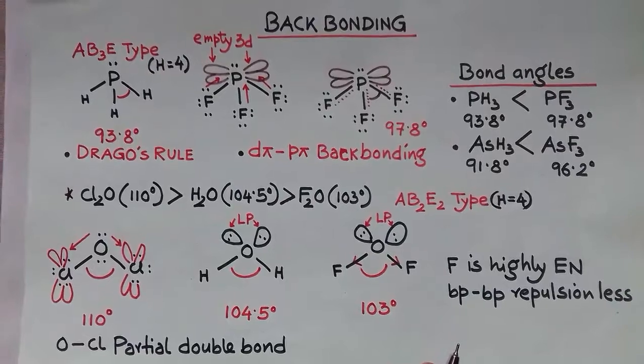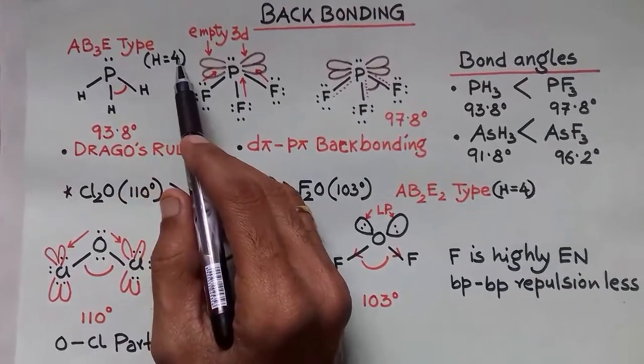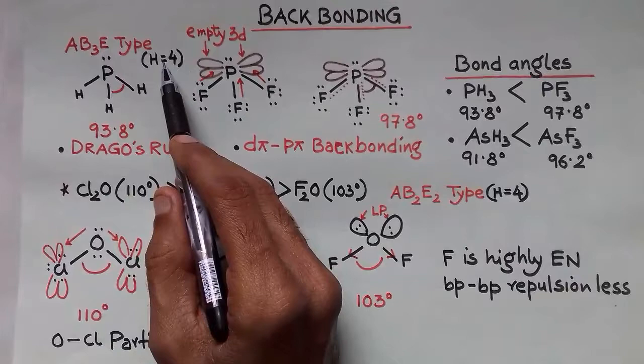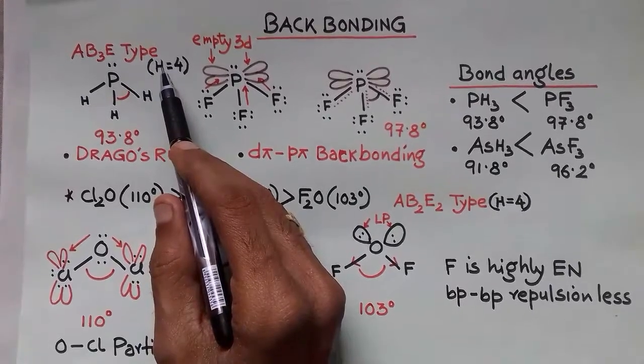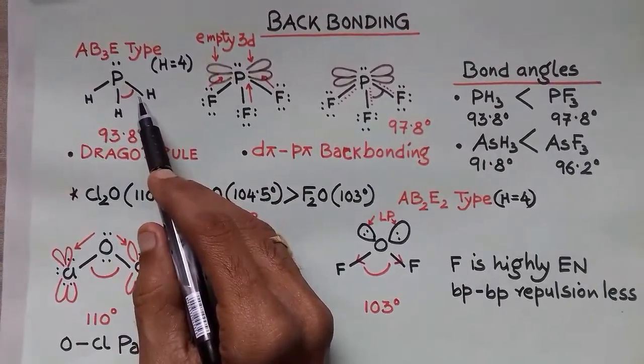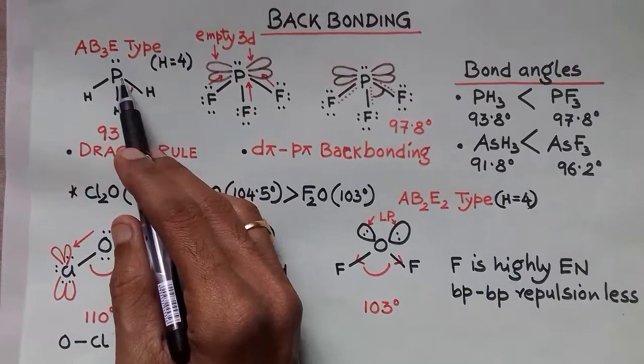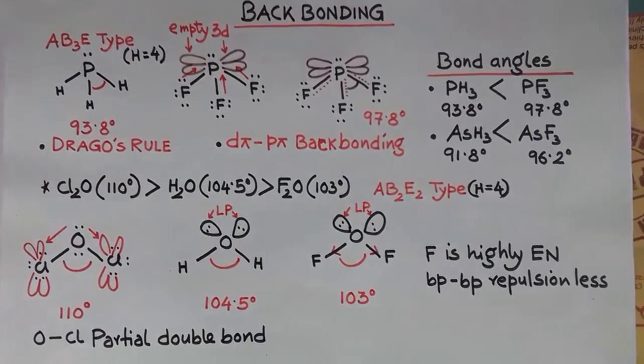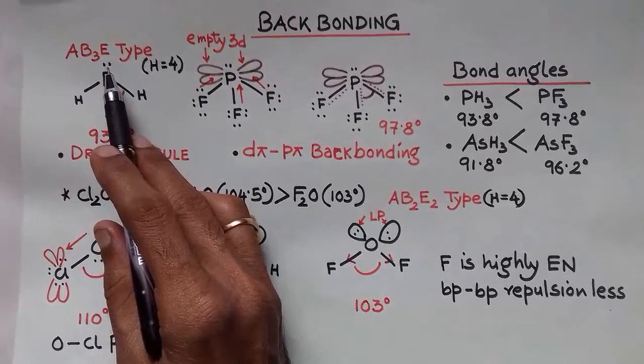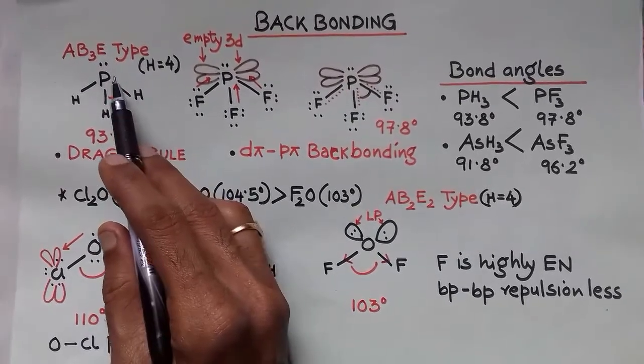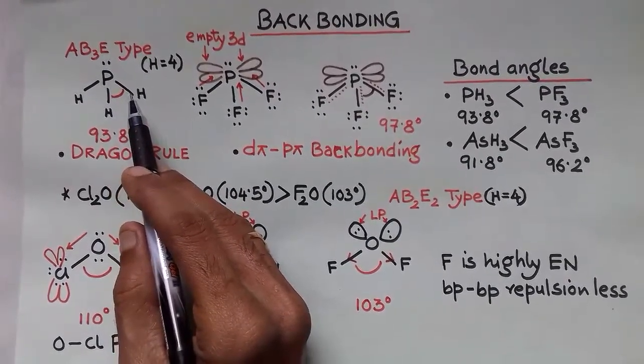First case is AB3E type where H equals 4, meaning SP3 hybrid orbitals - 4 hybrid orbitals with one lone pair. But in case of PH3, according to Drago's rule, phosphorus, arsenic, and antimony are not participating in SP3 hybridization. So the lone pair is exerting maximum repulsion and is placed in the s orbital, which is 3s, and p orbitals are overlapping with H.